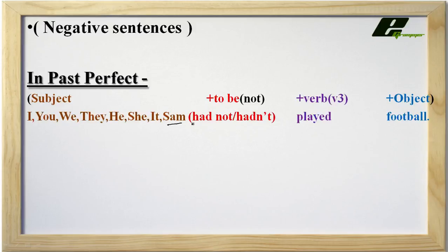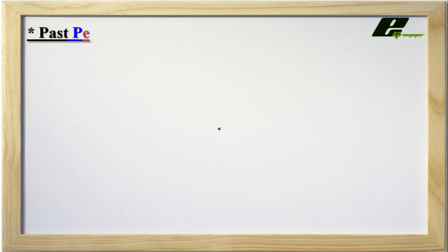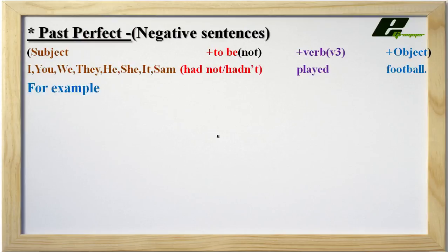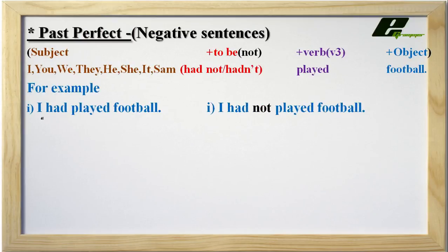For example: 'Sam had not played football' — meaning Sam had not done that activity. Also, 'Sam hadn't played football' is the same; 'hadn't' is a short form of 'had not'. To make a negative sentence, add NOT exactly after 'had'. For example: I had played football → I had not played football.